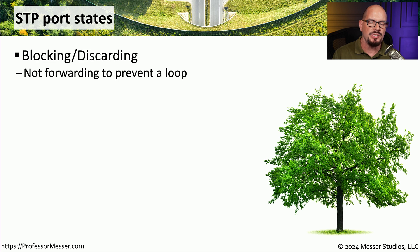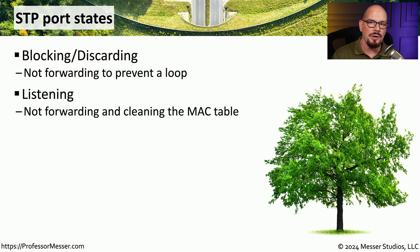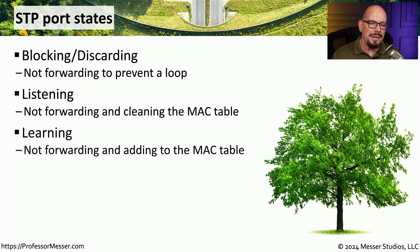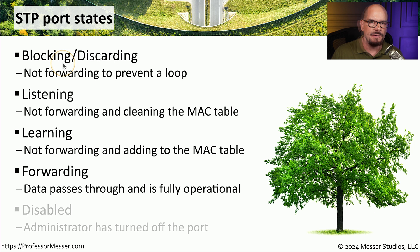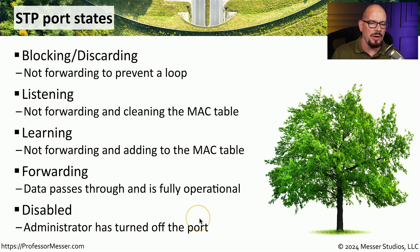Spanning Tree can put interfaces into different states. There's the blocking or discarding state, where it will not pass traffic through that interface. There's also a listening mode that Spanning Tree uses before making changes — it listens for other switches on the local broadcast domain and sets its configuration based on what it sees. It then begins learning and adding information to the MAC address table. Once it determines whether an interface should be enabled or disabled, it puts it into either forwarding or blocking mode. An administrator can also put an interface into a disabled mode, administratively turning off that port.